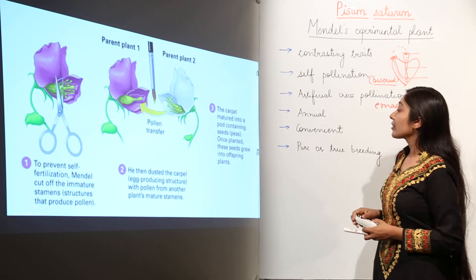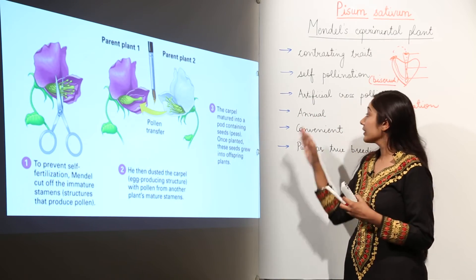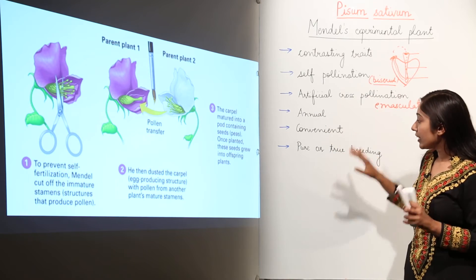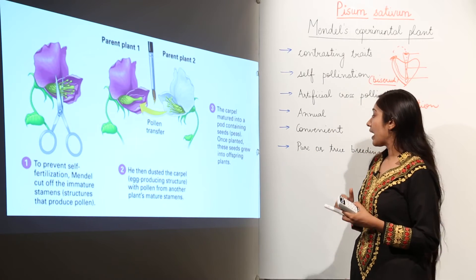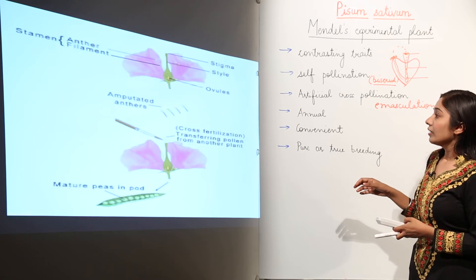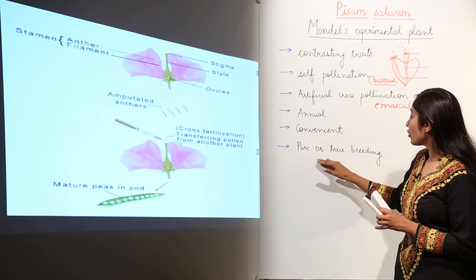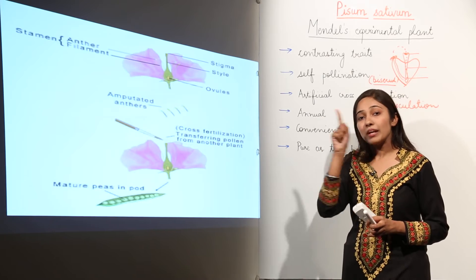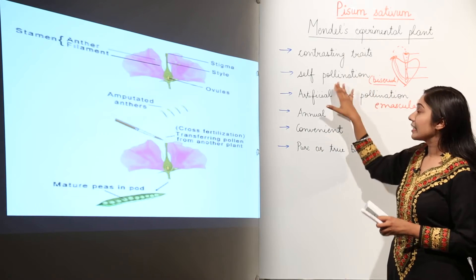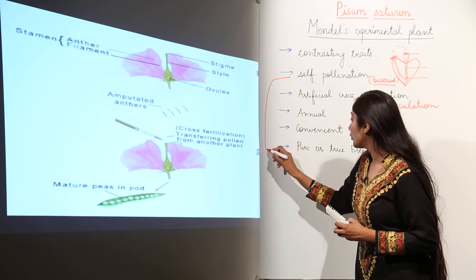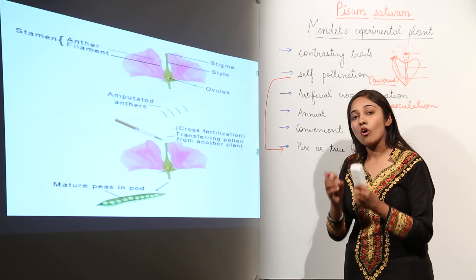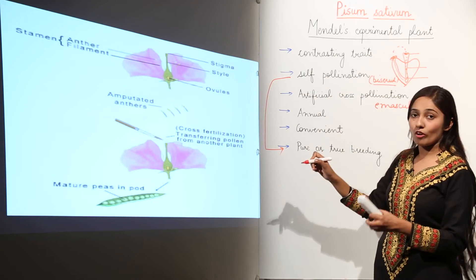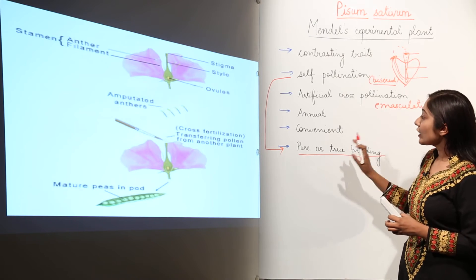Another advantage was that the pea plant is annual, meaning Mendel could get one complete generation within a single year, making it easy to track results. It was also convenient and easily cultivated. Additionally, because the plant is bisexual and capable of self-pollination, it produces pure or true breeding varieties — the offspring are always true breeding. This bisexual nature of the plant helped produce pure or true breeding plants, which is another reason Mendel chose it.